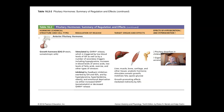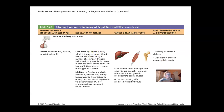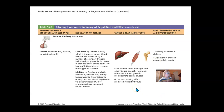Growth hormone is stimulated by GHRH — growth hormone releasing hormone — from the hypothalamus, which stimulates GH release from the anterior pituitary. GH is involved in growth of organs and bone. Too little growth hormone results in dwarfism; too much results in gigantism. Acromegaly is the term for enlarged hands and feet due to excess growth hormone.